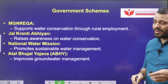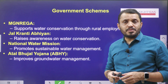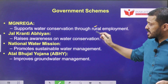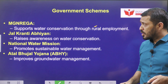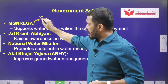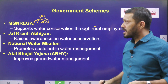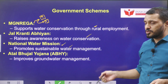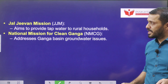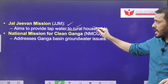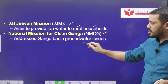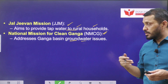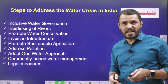Various government schemes have been launched by the union government as well as respective state governments to conserve water. The first one is MGNREGA, which supports rural employment and through it we try to conserve water. Next, Jal Kranti Abhiyan — raising awareness on water conservation. National Water Mission — promoting sustainable water management. Atal Bhujal Yojana — improving groundwater management. Jal Jeevan Mission — aiming to provide tap water to rural households. And the National Mission for Clean Ganga — to address the Ganga Basin groundwater issues in whichever states the river Ganga flows through.